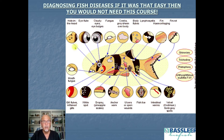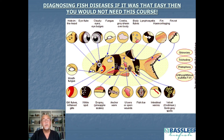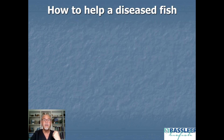If this diagram could so easily explain all the diseases on the fish — the spots, the scratches, the white and dusty things, the animals on it — then everybody would not need this course. But I will explain to you: it's not as easy as you think. With some help from a microscope, you can discover a lot of things.